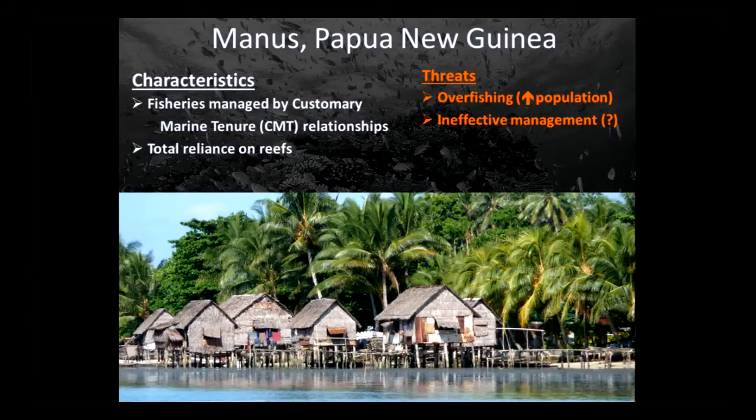We wanted to go to Manas Province in Papua New Guinea, which is a pretty remote, underdeveloped place. The fisheries there are managed through customary marine tenure relationships — traditional relationships where communities say, these are our reefs, those are your reefs, and there's not a lot of back and forth. For traditional reasons, these particular communities only fish; they trade fish with inland folks for agricultural products and are completely reliant on these reef systems. They've got problems driven by overfishing due to increasing population, and traditional management regimes are starting to break down, with a lot of poaching.